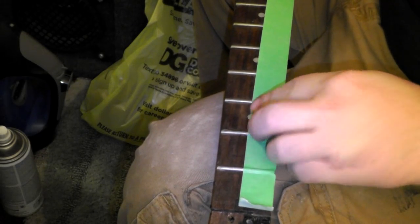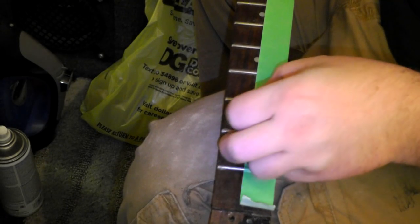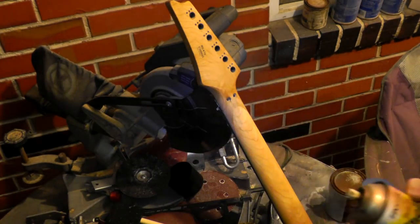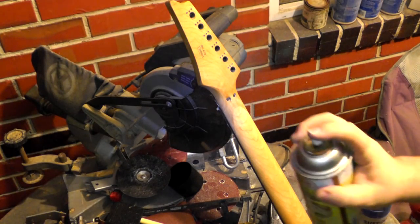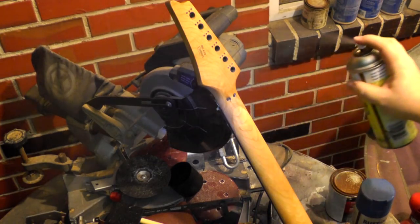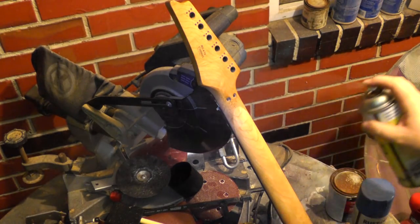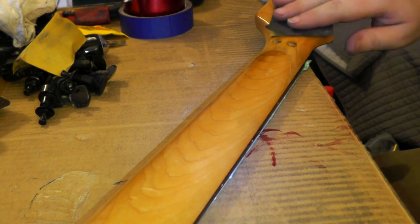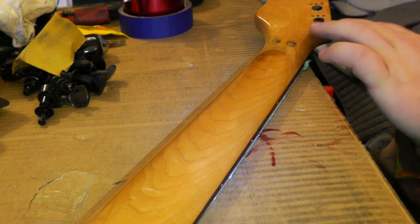So I'm taping off the fretboard, and I am making sure to really push the tape down in front of the frets so that there's no overspray with the shellac. This is a precoat of shellac just to get a little bit more of an even amber color over everything. And once that dries, about two hours later, I went ahead and sanded that with 800.